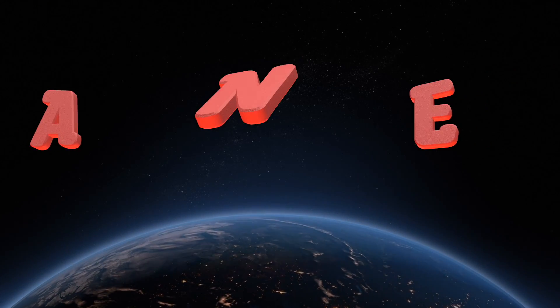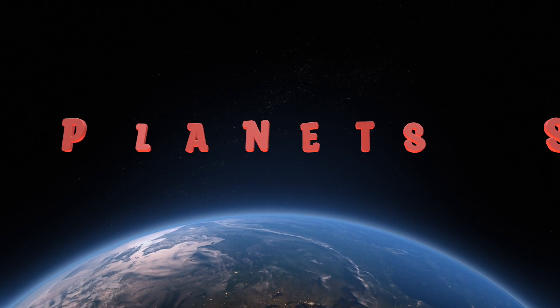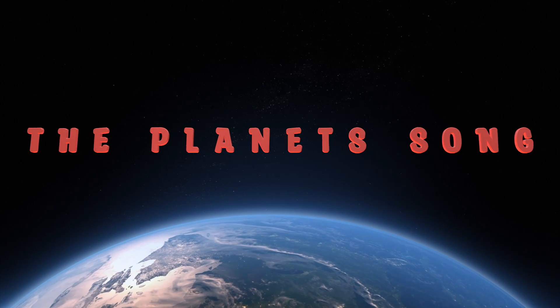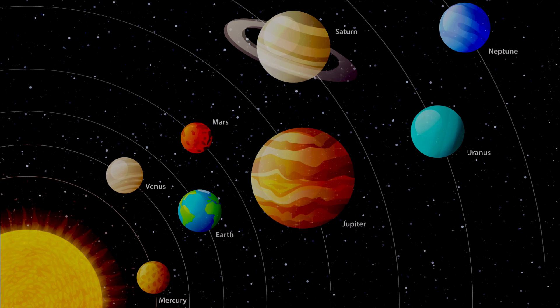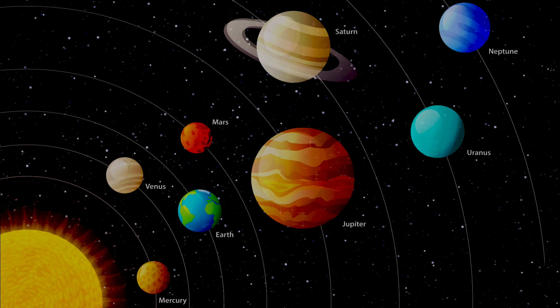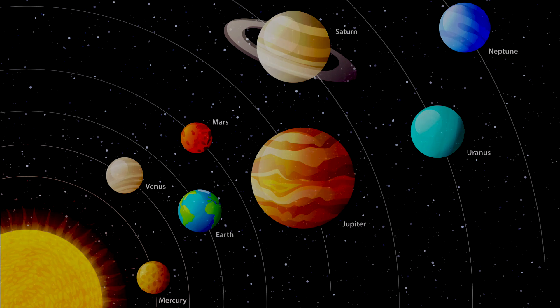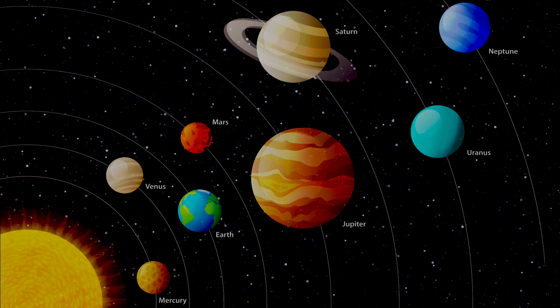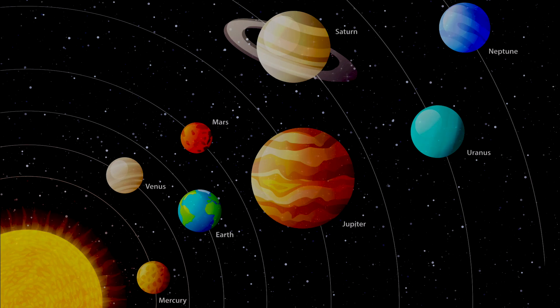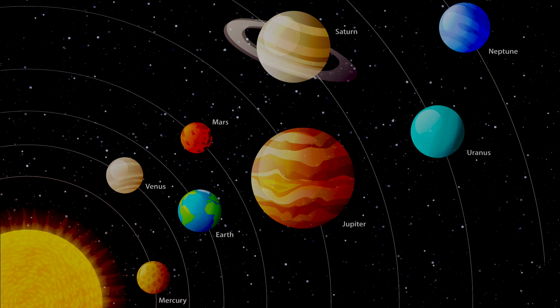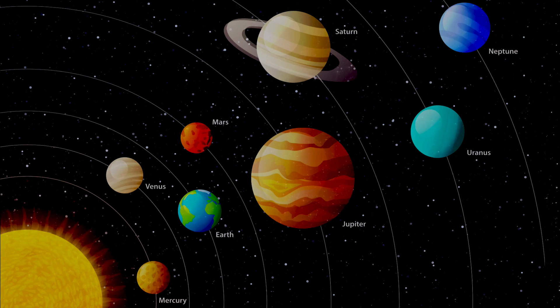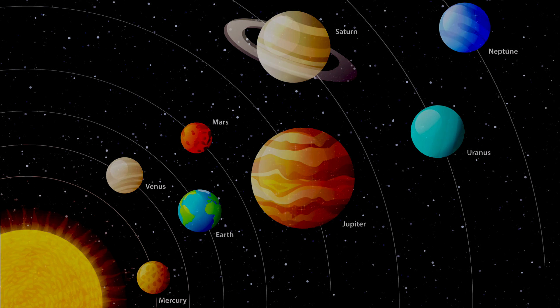There are eight planets in our solar system that revolve around the Sun. The Sun is a star, a hot ball of gas that gives heat and light to everyone. Let's learn the names of the planets, we'll start with the nearest one. Move out from the Sun one at a time.